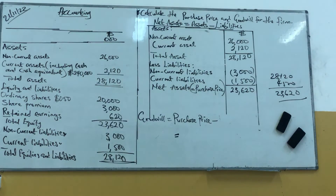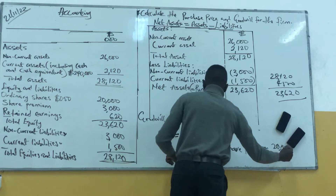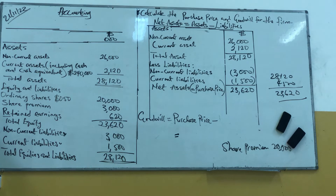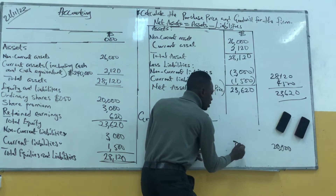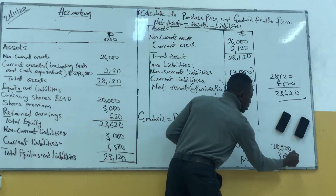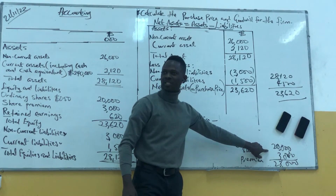They said share premium was $20,000. Share premium — can you see it there? $20,000. Another share is $20,000. Share premium $20,000. Plus — what is that? This is $3,000. What are the shares? $3,000. So we have share premium plus ordinary shares. The share value is $20,000 premium plus $3,000 — that gives us our purchase price.